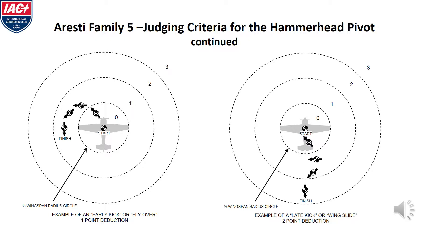Here we see two graphics that show what a judge might see when a competitor incorrectly executes a hammerhead pivot. On the left, the graphic shows the center of the aircraft moving laterally more than one-half wingspan while executing the pivot. On the right, the graphic shows the center of the aircraft sliding backwards while pivoting and finishing the pivot almost three half-wingspans from where the pivot started.